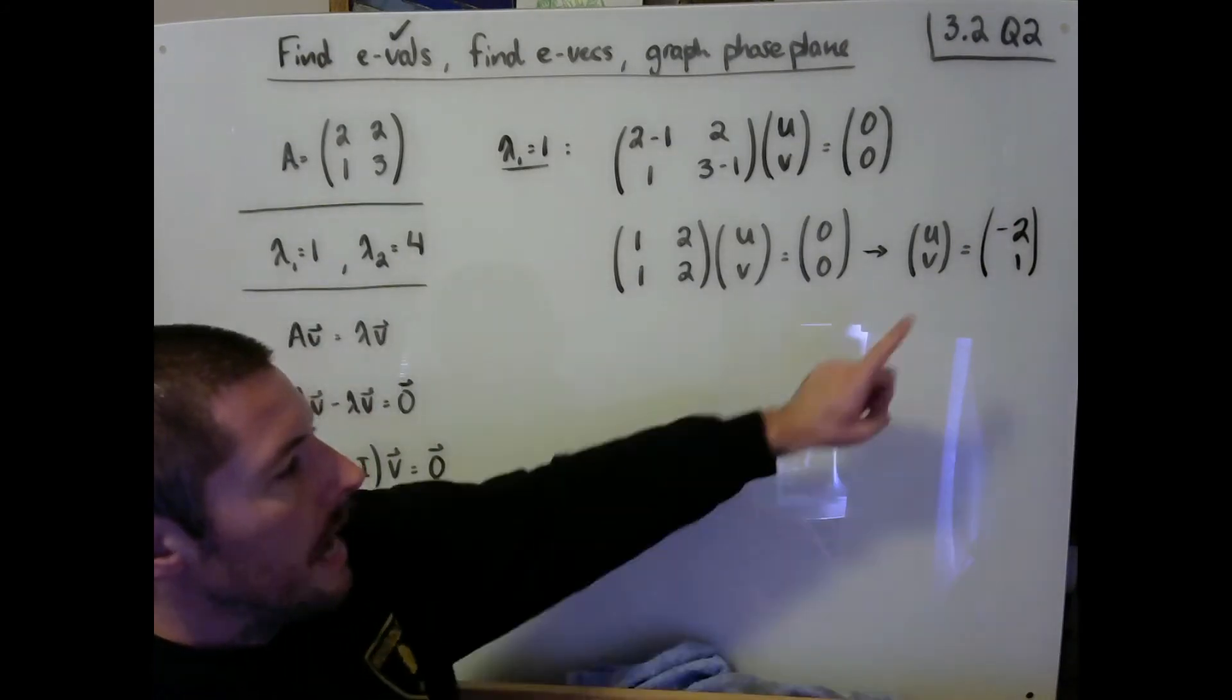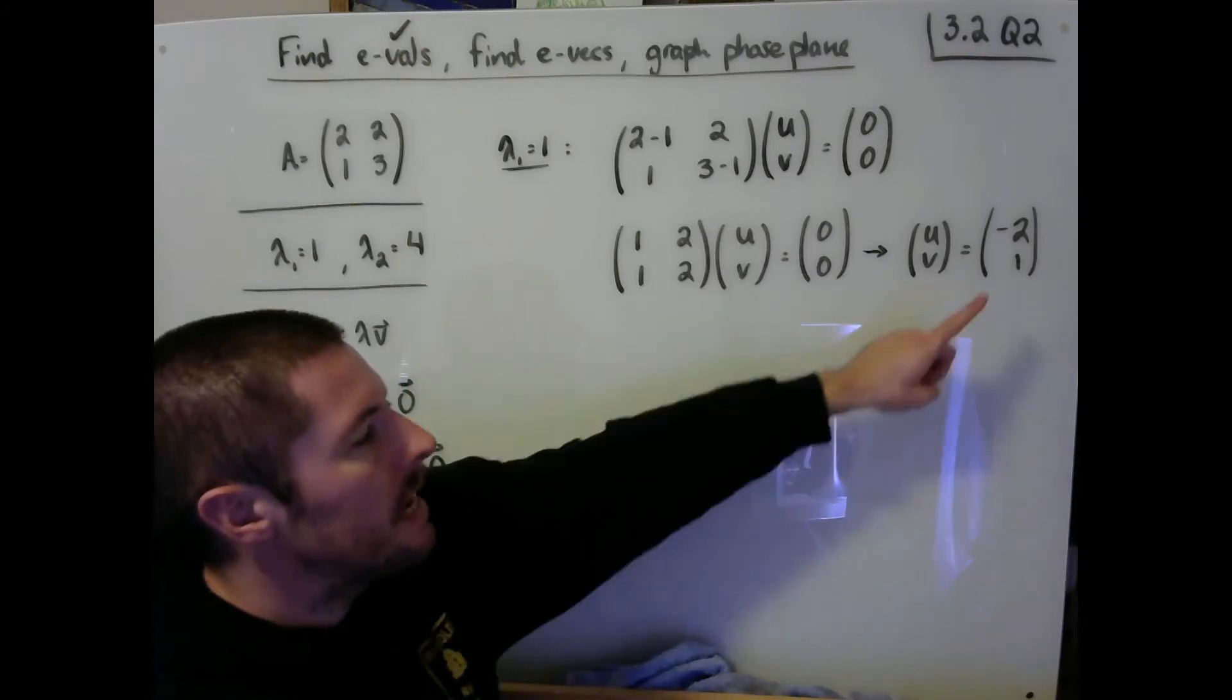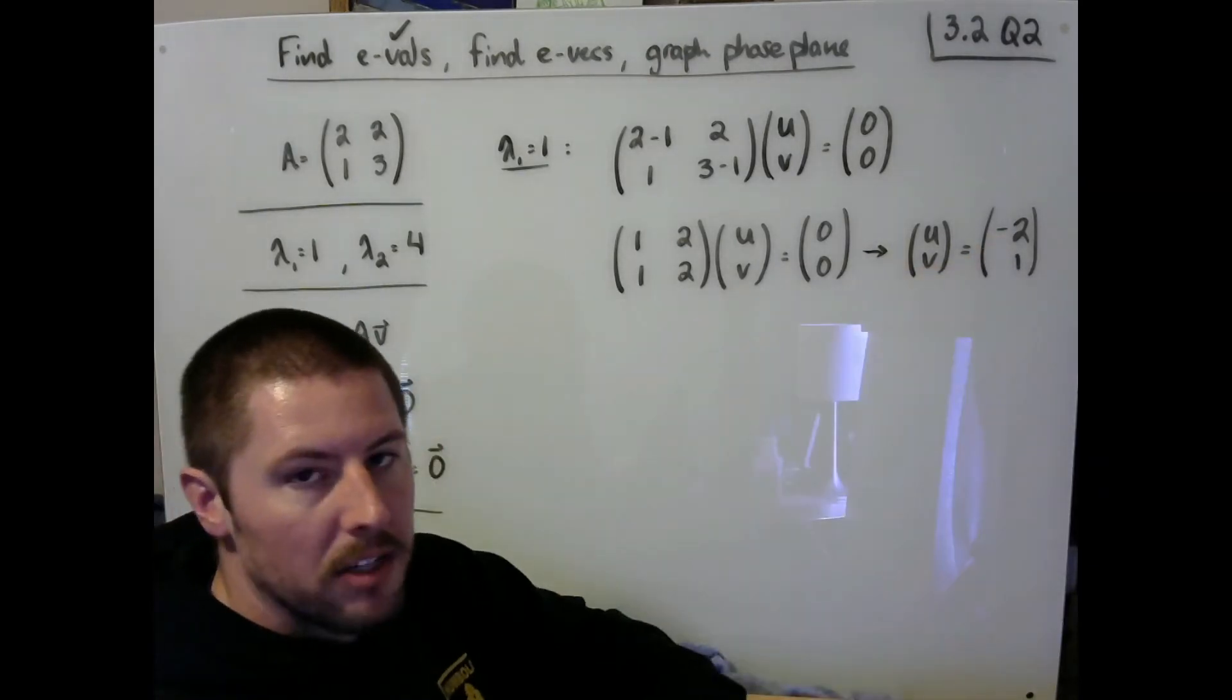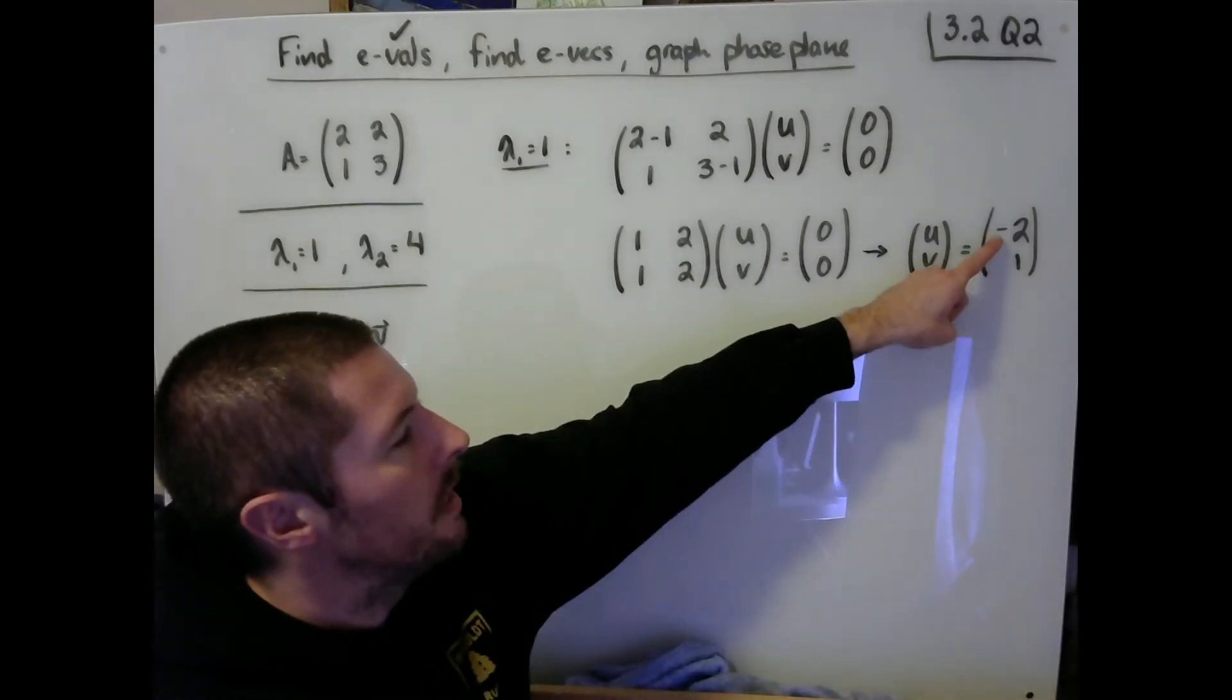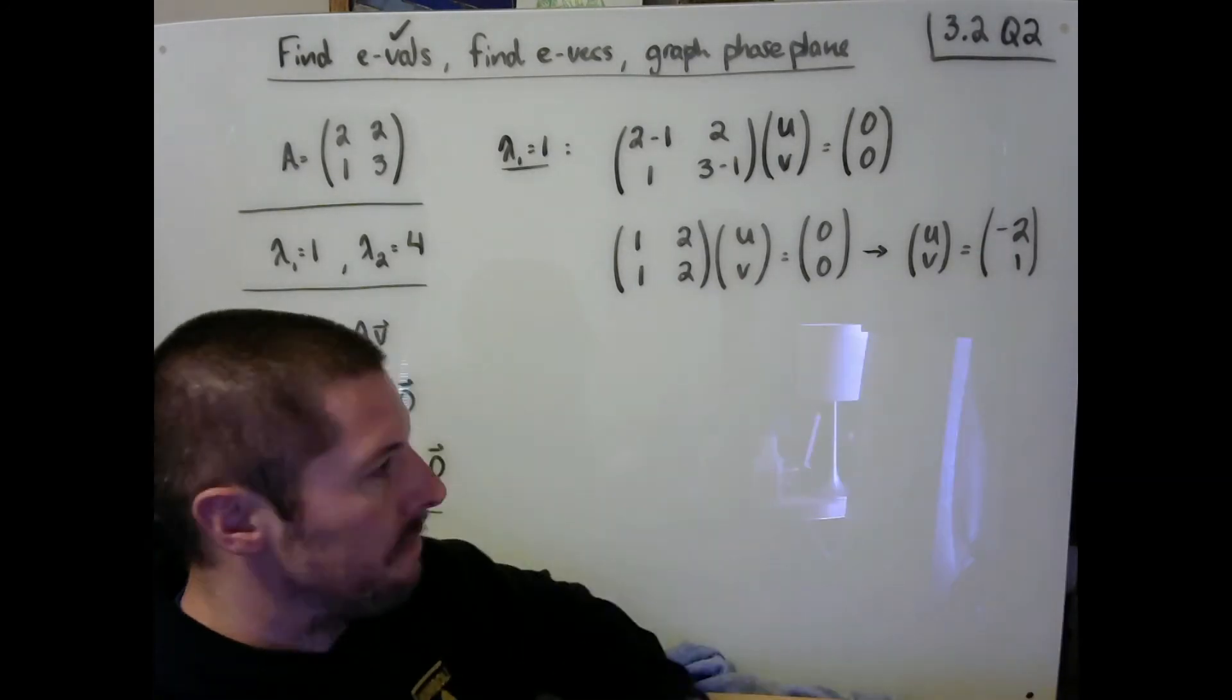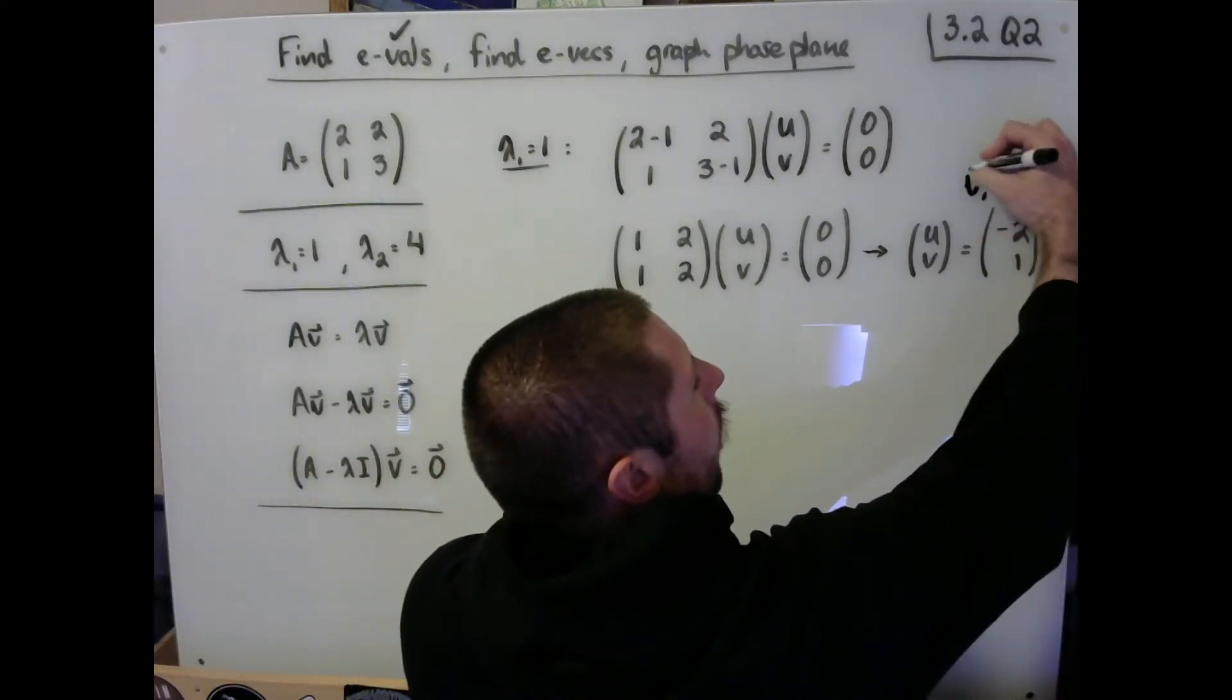A couple of things about this. This eigenvector that I've just found is one of an infinite number of eigenvectors that goes with lambda. We typically just always want to give the simplest representative of the family. Any constant multiple is going to work out here as well. When I say the simplest representative of the family, what I really mean is I try to make sure that one of the two values in my eigenvector is one almost always. I guess I try and avoid fractions. So any constant multiple is acceptable. It's just pretty typical to give the simplest form right there. So this is what we're going to go ahead and call our V1 vector right here.